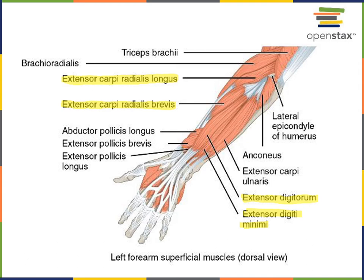Medial to extensor digiti minimi, the most medial of the extensor muscles on the posterior antebrachial region is extensor carpi ulnaris. The ulna is the medial antebrachial bone, whereas the radius is the lateral antebrachial bone. Extensor carpi ulnaris is on the posterior antebrachial region, found superficial to the ulna on the medial side. Its action is in the name — extensor carpi ulnaris performs extension of the radiocarpal joint.